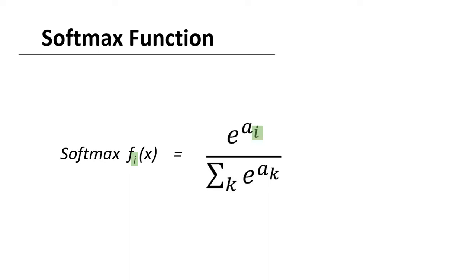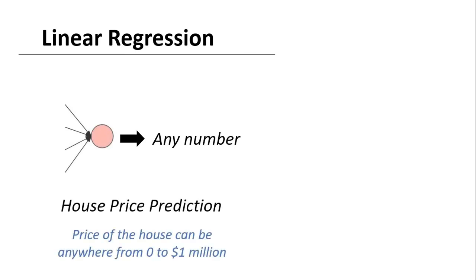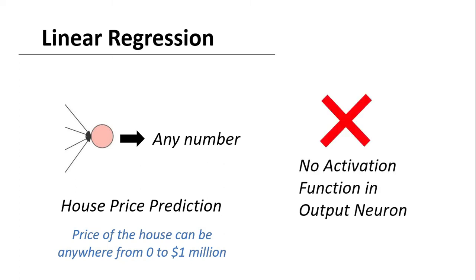We have discussed activation functions for classification problems, but what if our final output prediction is linear and can take any value — like predicting house prices, where the price can range from 0 to 1 million or more? In this case it is not suitable to use any non-linear activation function in the output neuron. We will still use activation functions in the hidden layers, but for the output neuron we will just take the linear output without any activation function for linear regression.